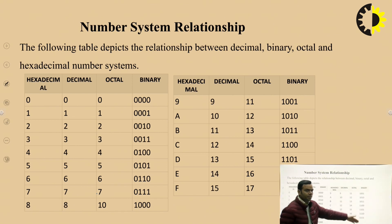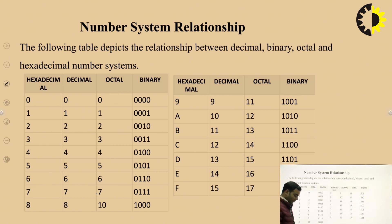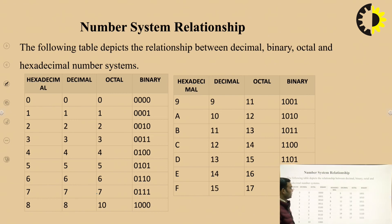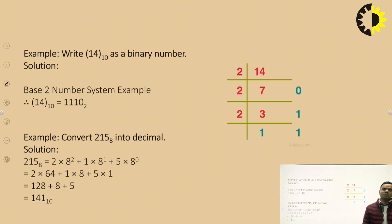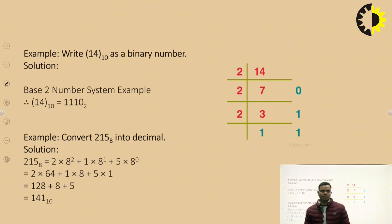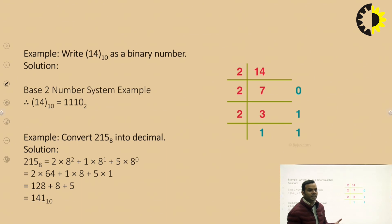The binary equivalents for all these values are also listed in the table, and you can easily convert numbers from decimal to binary or octal to binary. It is very easy to convert any number system — binary, octal, decimal, or hexadecimal — to decimal simply by multiplying the digits by their positional weights.